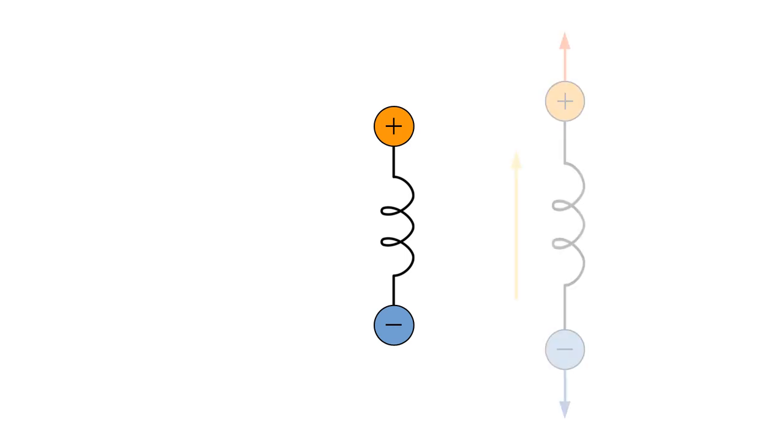When the upward-pointing electric field is present, the positive charge is pulled upward, and the negative charge is pulled downward. The spring will stretch until these electrical forces are offset. Energy has been extracted from the electric field and stored in the stretched spring.